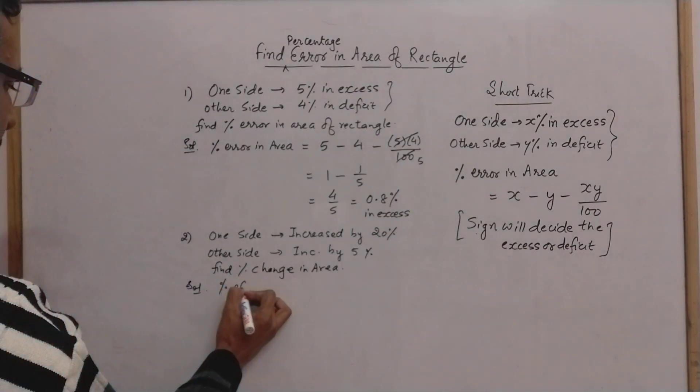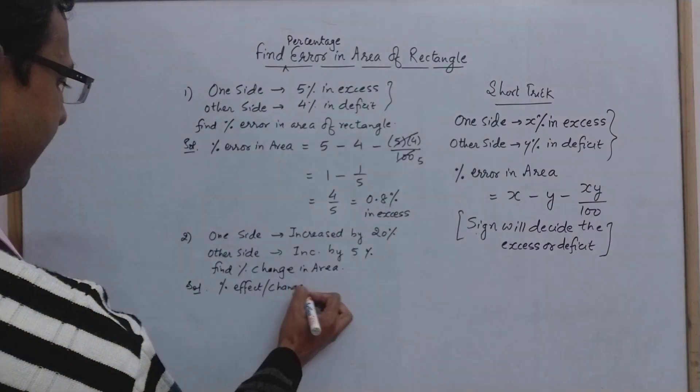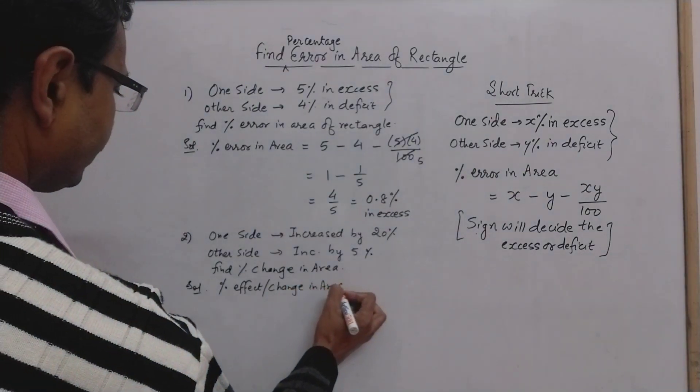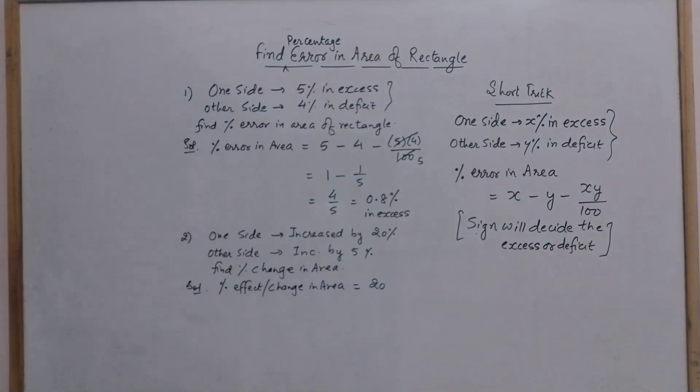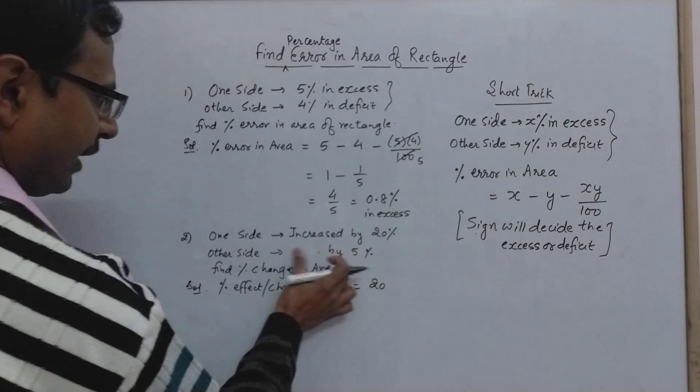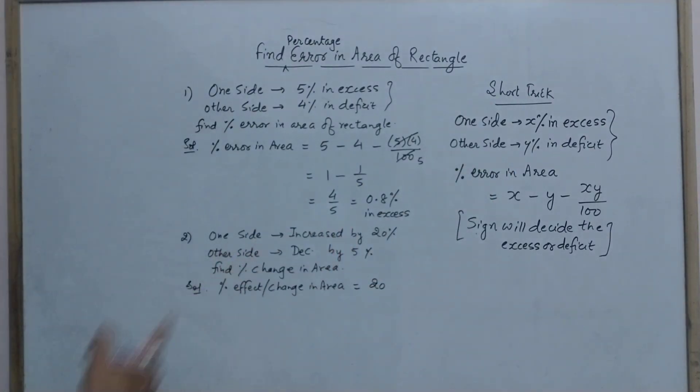The solution goes like this: percentage effect or percentage change in area will be equal to, see this is x and this is y, so x minus minus, okay we are taking deficit so I'll take this case as decrease only, decrease by 5 percent.